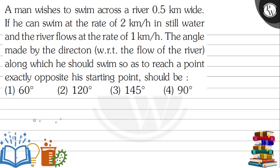Hello, let's go through the question. A man wishes to swim across a river 0.5 km wide. If he can swim at the rate of 2 km per hour in still water and the river flows at the rate of 1 km per hour, the angle made by the direction with respect to the flow of the river along which he should swim so as to reach a point exactly opposite his starting point should be: option 1 is 60 degrees, option 2 is 120, option 3 is 145, option 4 is 90 degrees.